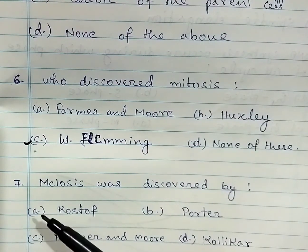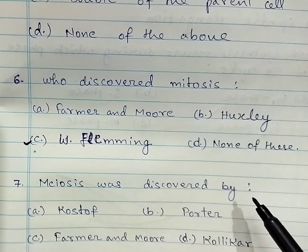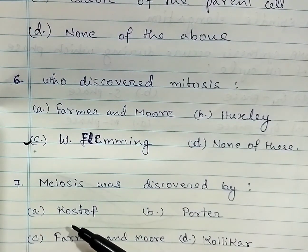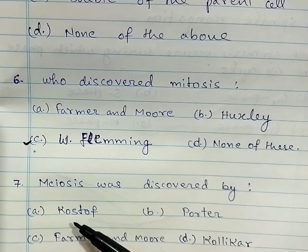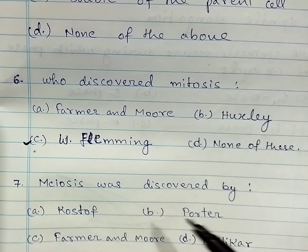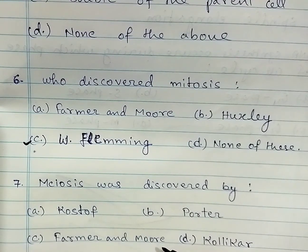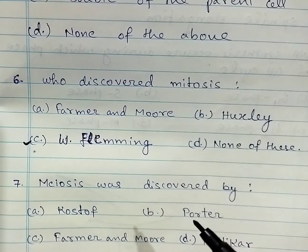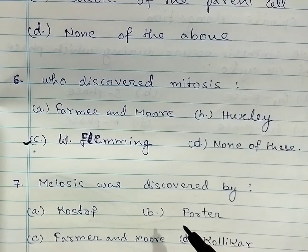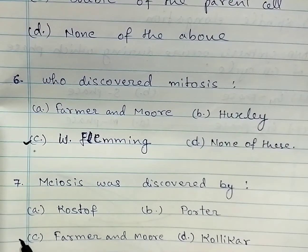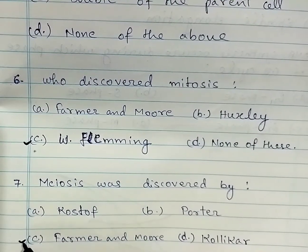Question number seven: meiosis was discovered by — A: Kostoff, B: Potter, C: Farmer and More, D: Colicker. The correct answer is C: Farmer and More.